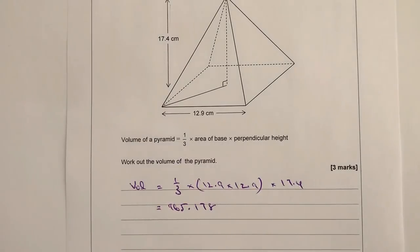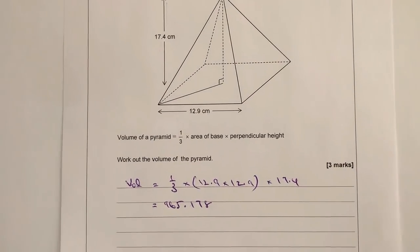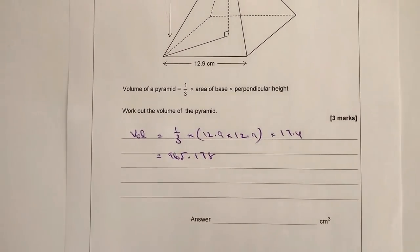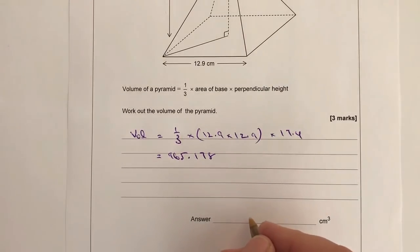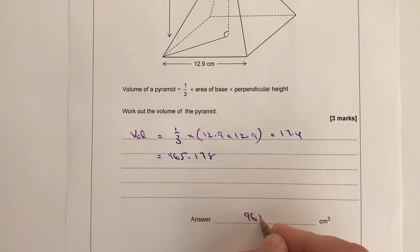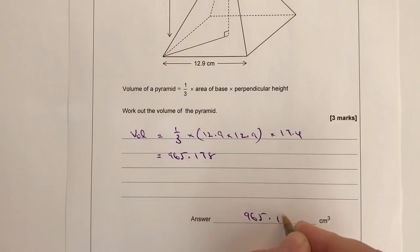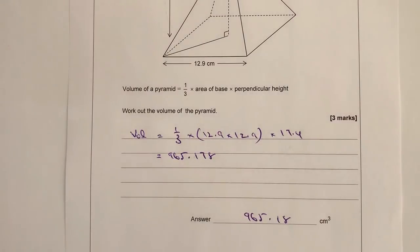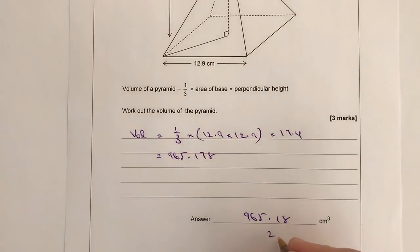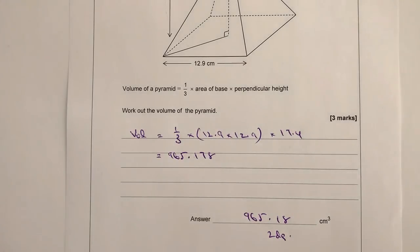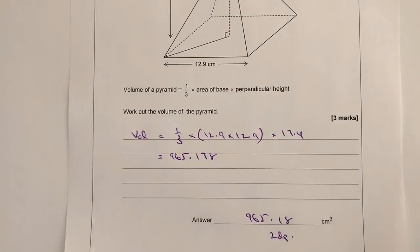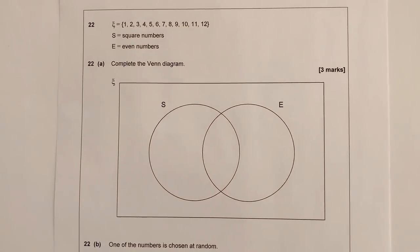So pop that in your calculator and you should come out with 965.178. Now it hasn't actually asked you for any kind of decimal places or significant figures or anything like that, so you can either leave it at that if you want to, or you can say it's going to be 965.18 centimeters cubed, and that's to 2 decimal places.